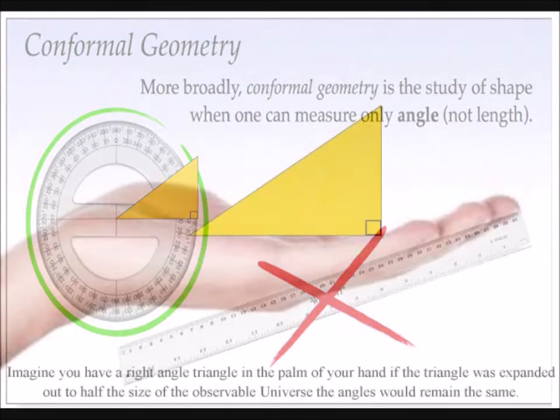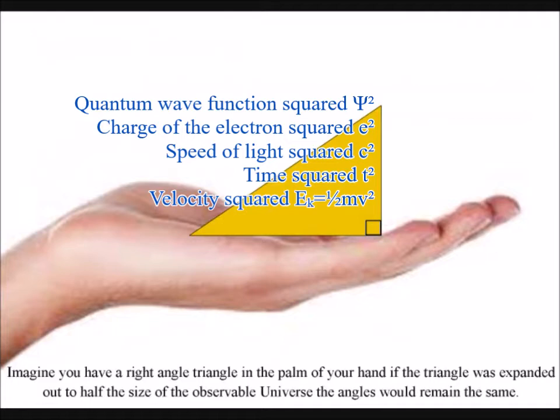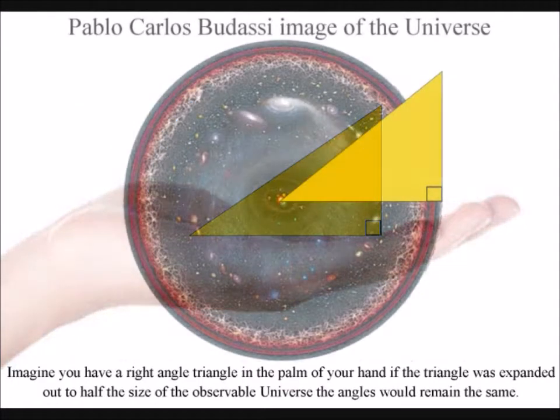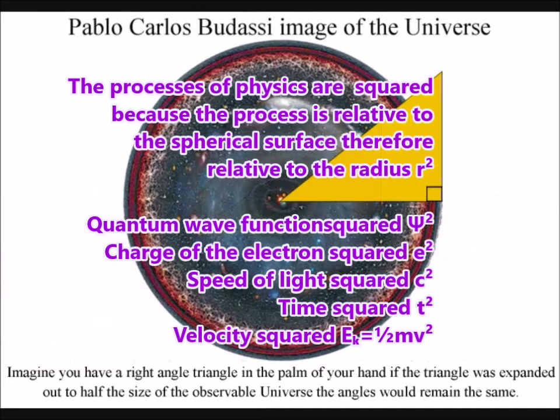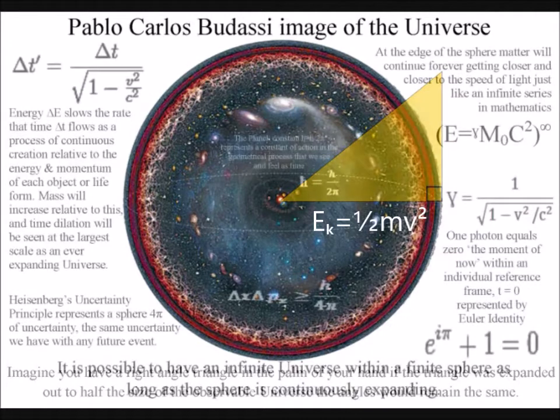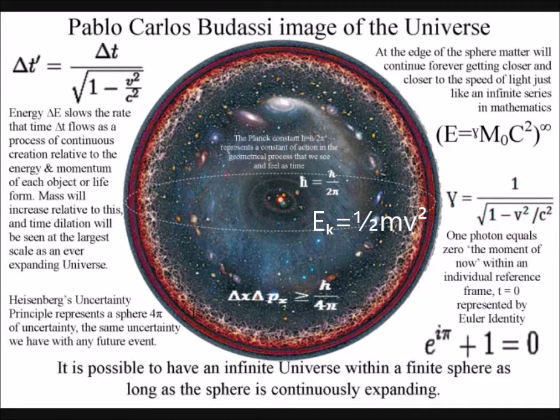Imagine you have a right-angle triangle in the palm of your hand. If the triangle was to expand out to half the size of the observable universe, the angles would remain the same. This information supports the idea that the universe could be based on one universal geometrical process, from the very small to the very large.